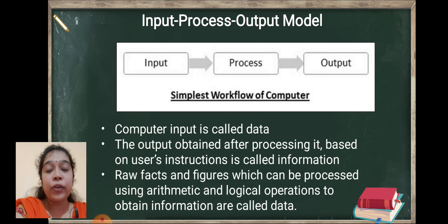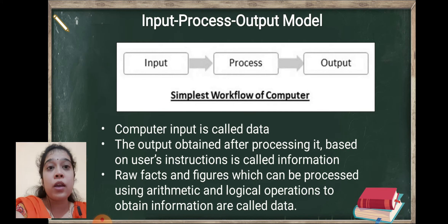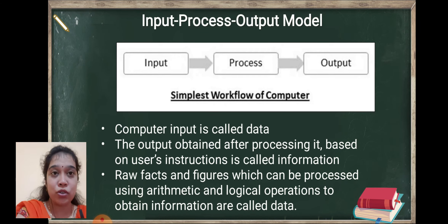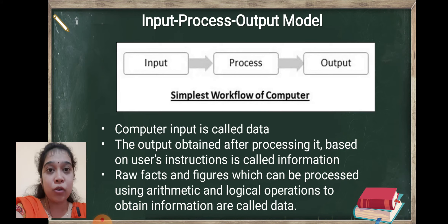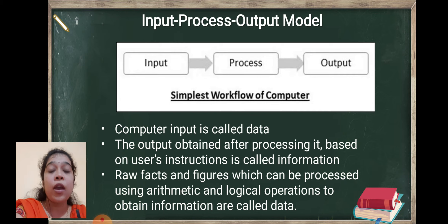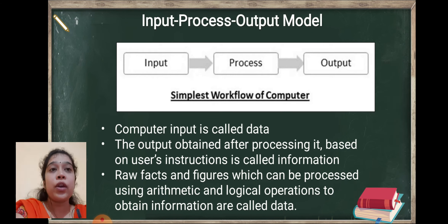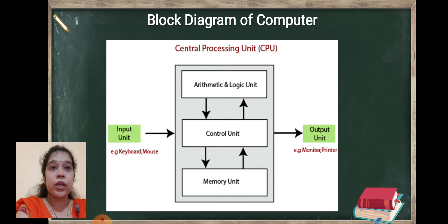जैसे अपन computer को input provide करते हैं, जो भी raw input रहता है, computer उस पर process करेगा। Process जो है arithmetic and logical operations के basis पर होता है। अपने raw data के ऊपर computer करता है according to the user's instruction, और फिर raw data के ऊपर processing करके output देता है जो कि information रहती है। तो यह हो गया input, process and output model, which is the simplest workflow of the computer.